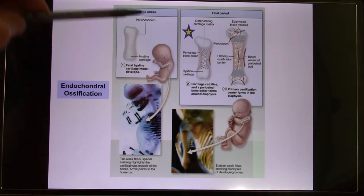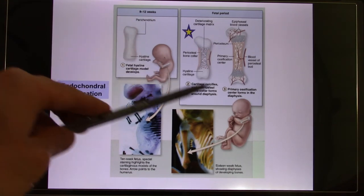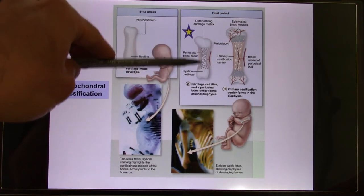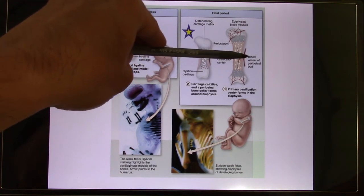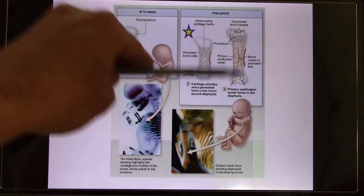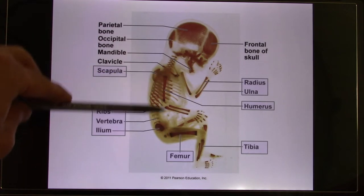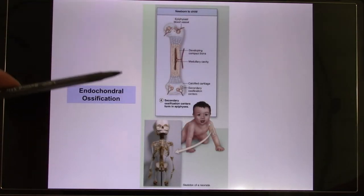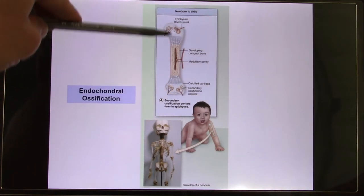In the embryo, they first produce cartilage. When the embryo develops into a fetus, the inside center part forms the primary ossification center — blood vessels grow in and turn it into bone. Then secondary ossification centers begin to form. These long bones go through this process, and when a baby is born, the bone looks like this — two ends with a lot of cartilage.